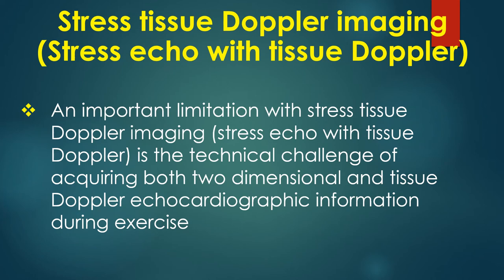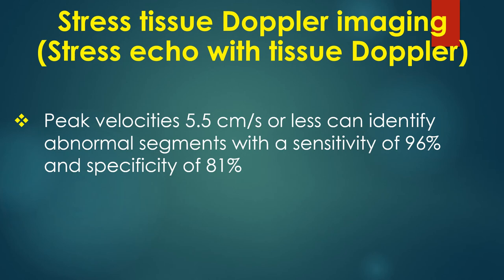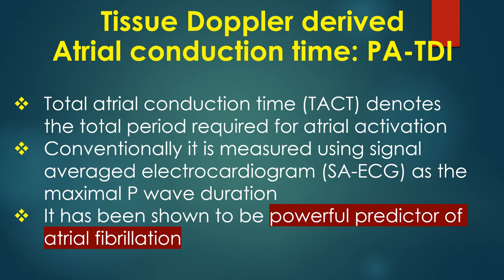Stress tissue Doppler imaging — or stress echo with tissue Doppler — has an important limitation in the technical challenge of acquiring both two-dimensional and tissue Doppler echocardiographic information during exercise. Peak myocardial systolic velocity SA increases with both exercise and dobutamine stress. Tissue Doppler techniques can identify abnormal segments better than two-dimensional echo and has better reproducibility. Peak velocities of 5.5 cm per second or less can identify abnormal segments with a sensitivity of 96% and specificity of 81%.